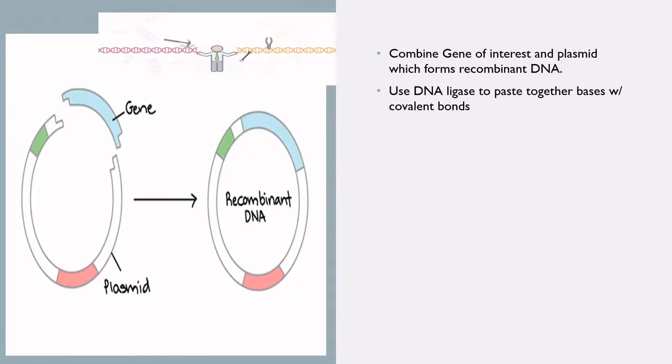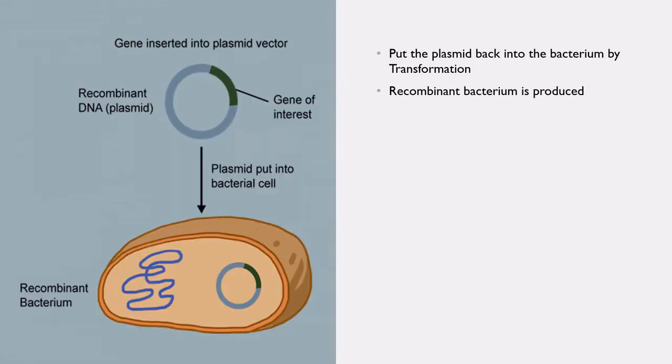Combine the gene of interest, isolated from the donor DNA, with the plasmid isolated from the bacterial cell to form a recombinant DNA molecule. Use DNA ligase to join the bases by forming covalent bonds. After inserting the gene of interest into the plasmid vector, put the plasmid vector back into the bacterial cell by transformation. The recombinant bacterium is now produced.